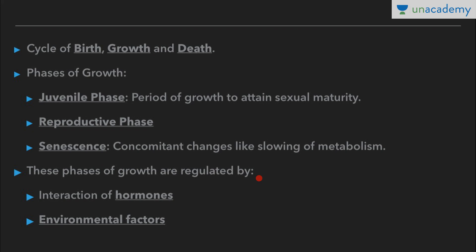These phases of growth are regulated by interaction of hormones. In plants, there are five hormones — auxin, gibberellins, ethylene, abscisic acid, and cytokinin — which regulate these phases. In humans, growth hormone regulates growth. For reproduction, we have gonadotropins: gonadotropin-releasing hormone releases gonadotropins — LH and FSH — which regulate the reproductive phase in humans.